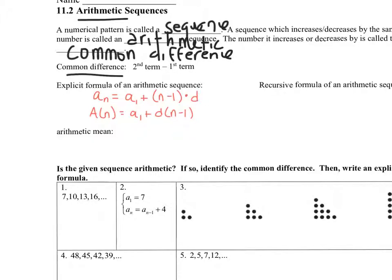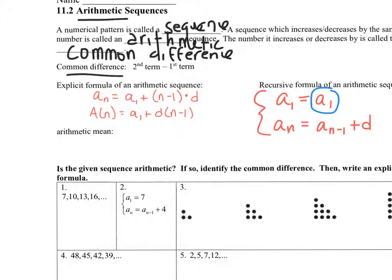We also have a recursive formula, and for that you need two things: you always need to know the first term, and you need to know the common difference — how to get the next term. It's written as a sub n equals a sub n minus 1 plus d, where a sub n minus 1 means the previous term. For example, to find the sixth term you'd need the fifth term. I always write plus d because d could be a negative number.